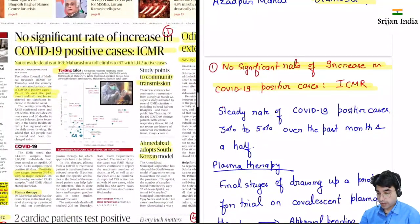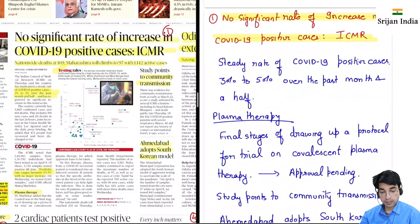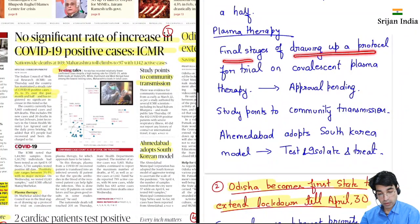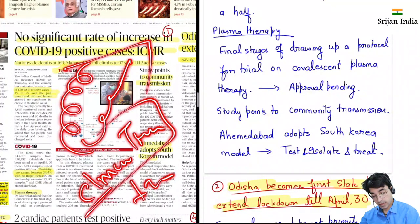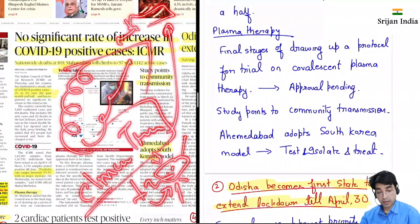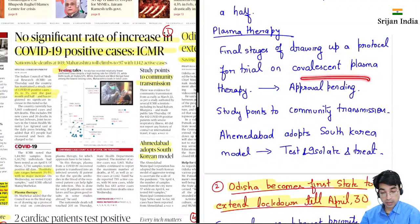Pahala topic hai: no significant rate of increase in COVID-19 positive cases — thoda relief mil raha hai. Steady rate of COVID-19 positive cases 3 to 4 percent hai over the past month and a half. Plasma therapy ki yahan pe baat kiya hai — final stages of drawing up protocol banayenge. Koi bhi naya process aata hai toh uska pehle clinical trial hota hai — usko test karte hain sample audience mein ki woh effective hai ya nahi, side effects toh nahi hain. Then jaake hum usko phir mass public ko recommend karte hain. Abhi is protocol ki final stages form hongi. Convalescent plasma therapy ka approval pending hai.